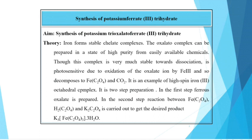Theory: Iron forms stable chelate complexes. The oxalate complex can be prepared in a state of high purity from easily available chemicals. Though this complex is very much stable towards dissociation, it is photosensitive due to oxidation of oxalate iron by Fe3+ and so decomposes to FeC2O4 and CO2. It is an example of high-spin iron octahedral complex.